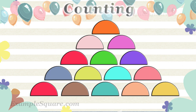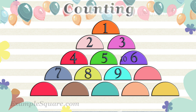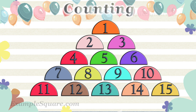How many semicircle shapes are there? One, two, three, four, five, six, seven, eight, nine, ten, eleven, twelve, thirteen, fourteen, fifteen. There are fifteen semicircle shapes.